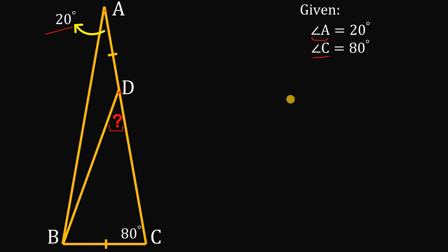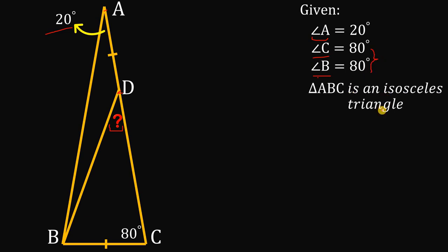Take note: the sum of the angles inside a triangle must add up to 180 degrees. Therefore, angle B must be equal to 80 degrees. Since two angles are the same, triangle ABC is an isosceles triangle. Since it is an isosceles triangle, two sides must be equal — side AB must be equal to side AC. Also given: AD must be equal to BC.